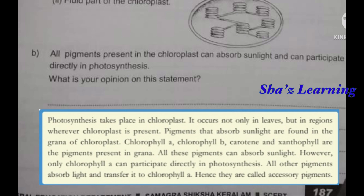Photosynthesis takes place in the chloroplast. It occurs not only in leaves, but in all regions where chloroplast is present. The pigments that absorb sunlight are found in the grana of the chloroplast. Chlorophyll A, chlorophyll B, carotene, and xanthophyll are the pigments present in the grana.